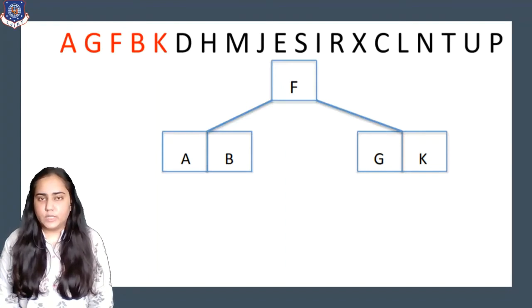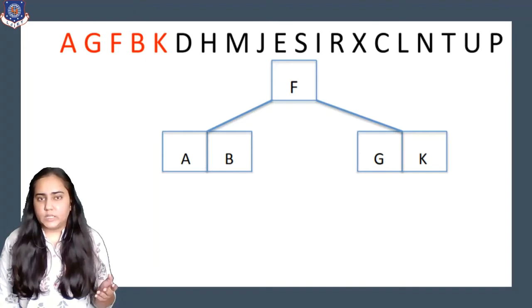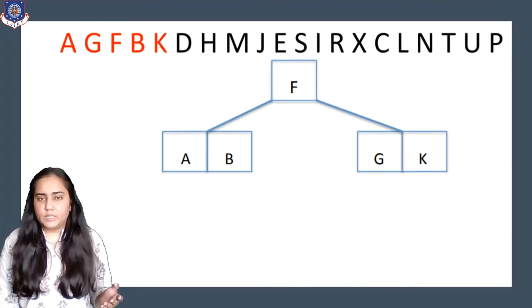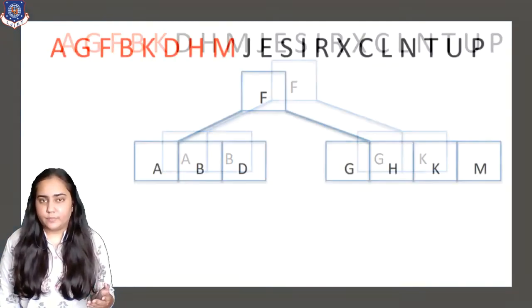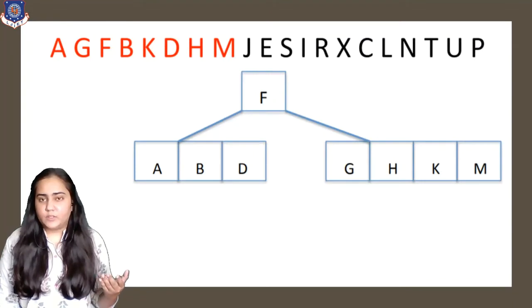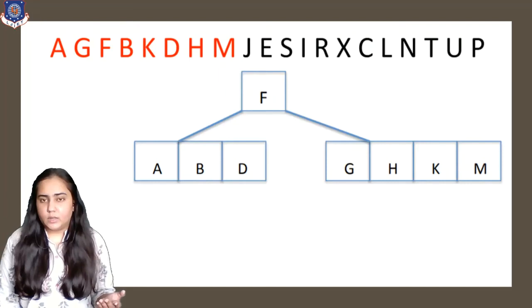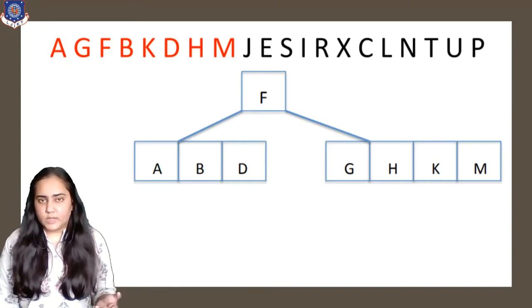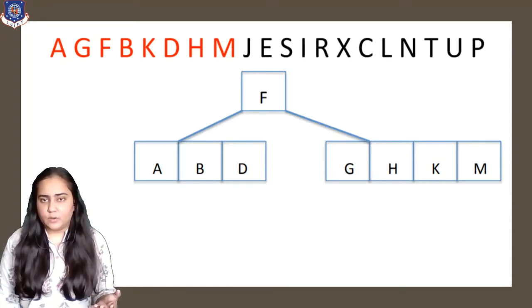Next we insert D. D is less than F so it goes to the left of F, and since D is greater than B it can be inserted next to B. We can insert H on the right side of F, placing it in ascending order next to G. M can also be inserted on the right side of F, placed in ascending order next to K.